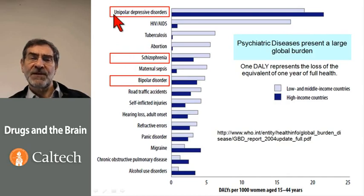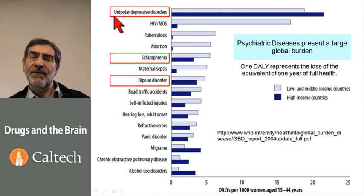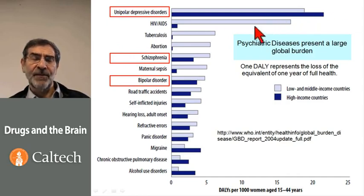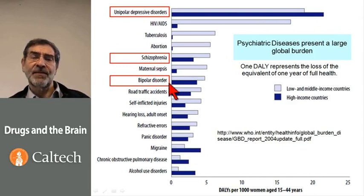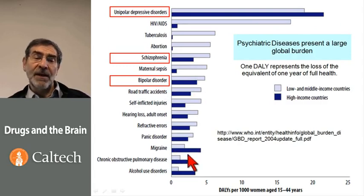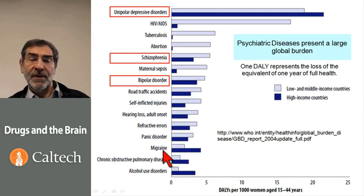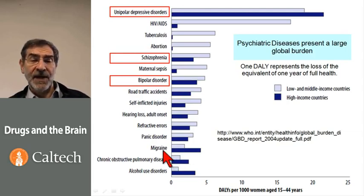Unipolar depressive disorder, as we'll see, seems to be reported more for women than for men, so this bar would be shorter for men. Schizophrenia — very important. Bipolar disorder — very important, both in low- and high-income countries. Migraine, another very important disorder of the brain, will unfortunately not be treated in our course just for lack of time.